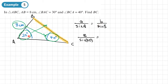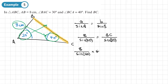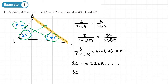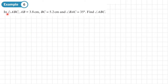The second pairing contains the unknown, so we have BC over sine 30. Rearranging, we multiply both sides by sine 30 to get BC = 8 over sine 40 times sine 30. Calculating on the calculator gives 6.2228..., which rounds to 6.22 centimetres to three significant figures.